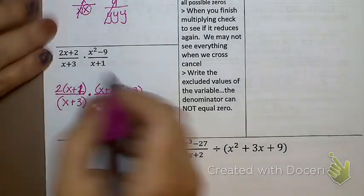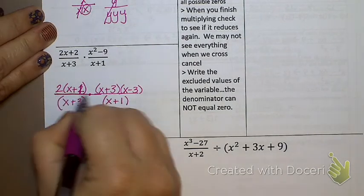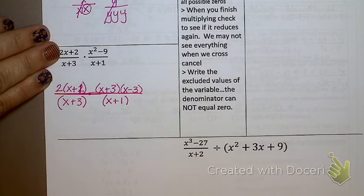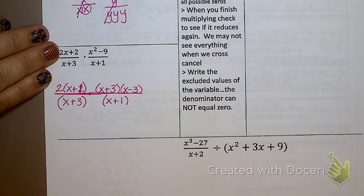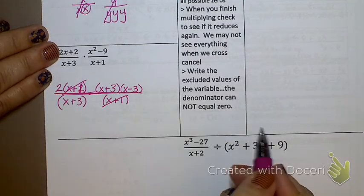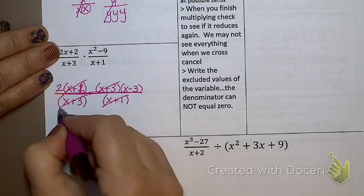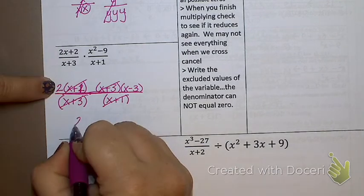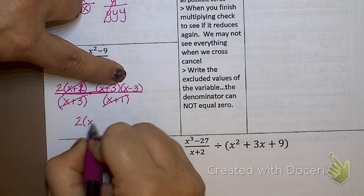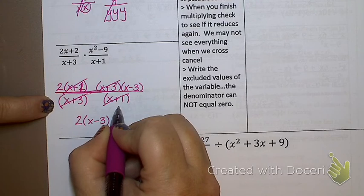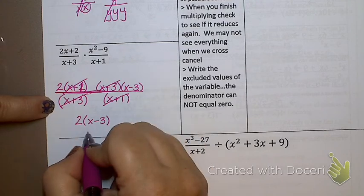Now I want to start canceling things. What things do you see that are on top that match on bottom that I can cancel? x plus 1's. I can cancel that x plus 1 and that x plus 1. What else? x plus 3. Anything else? No. So what do I have left? I have a 2. I have a parentheses x minus 3. There's nothing on the denominator so what would I put? I could either put over 1 or I don't have to put anything at all. Right?